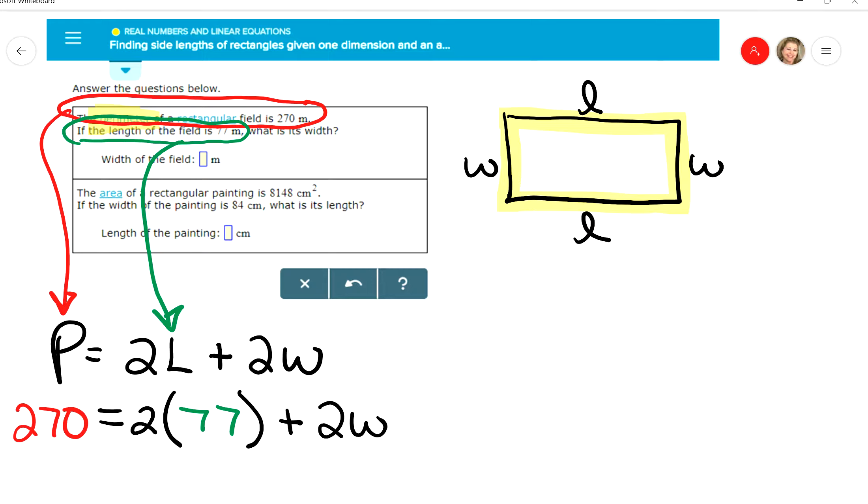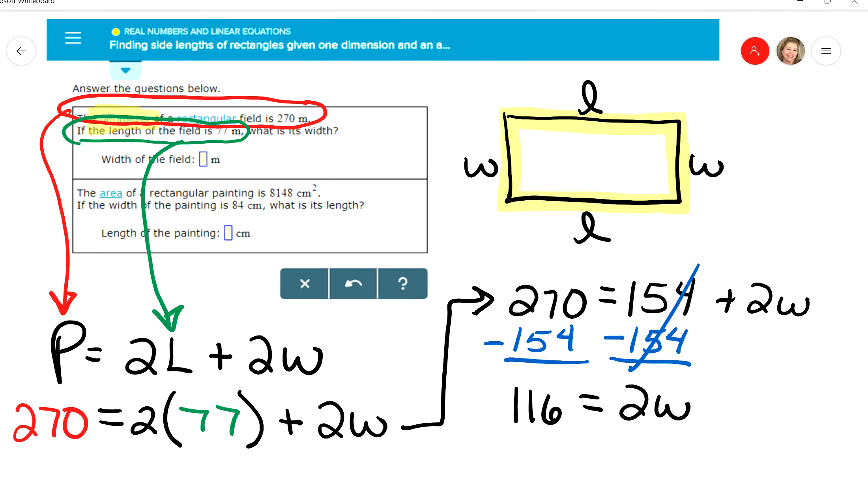What I need to do now is simply solve this for W. So 270 is going to equal 2 times 77 is 154, plus 2w. And then to get W by itself, the first thing I'm going to do is subtract the 154 from both sides so that it cancels out here. And then 270 minus 154 is going to give me 116. And then to solve for W, divide off that 2 so they cancel here, and divide this by 2, and half of 116 is 58.